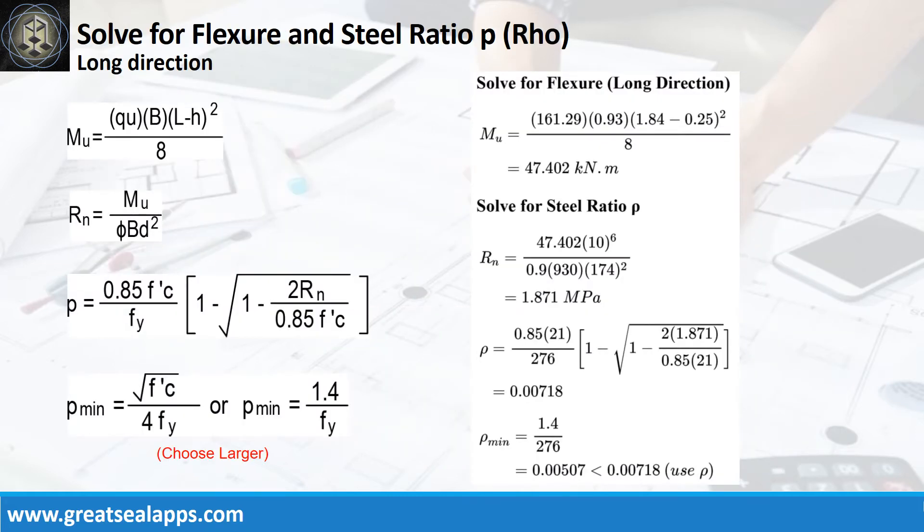At long direction, given ultimate soil pressure equals 161.29 kPa, footing width equals 0.93m, footing length equals 1.84m, and column side equals 250mm, the maximum moment is 47.402 kNm.